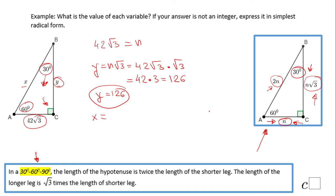Right, which is nothing else than 2n. We're gonna have 2 times 42√3, so that will be 84√3. And that's it.